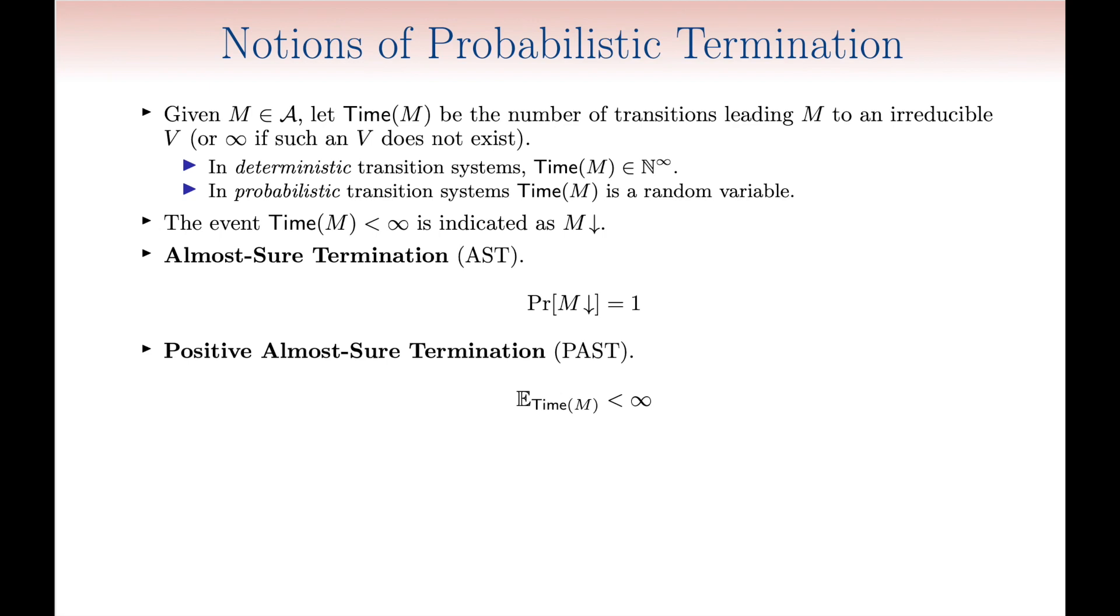A stronger notion of termination, called positive termination, instead corresponds to asking time t to have finite expectations. A counterexample to the equivalence of the two definitions is the fair binary discrete random walk on the natural numbers, which is notoriously AST, but not PAST.